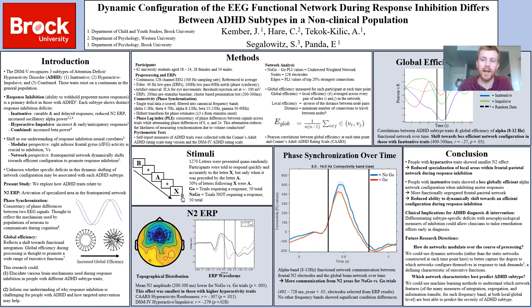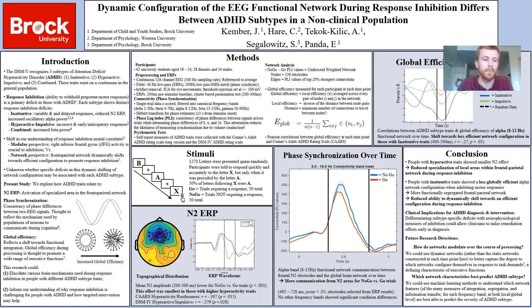Recently, there's been a shift in how we understand the neural correlates of response inhibition. While previous research tended to favor a modular perspective — which thought that the right inferior frontal gyrus is crucial for inhibition, receiving sensory signals and communicating with motor areas — research now tends to favor a network perspective, which suggests that communication within the frontal parietal network dynamically shifts towards an efficient organization, and that efficiency is what promotes response inhibition. With this new theory, it's currently unknown whether there are specific deficits associated with each ADHD subtype.